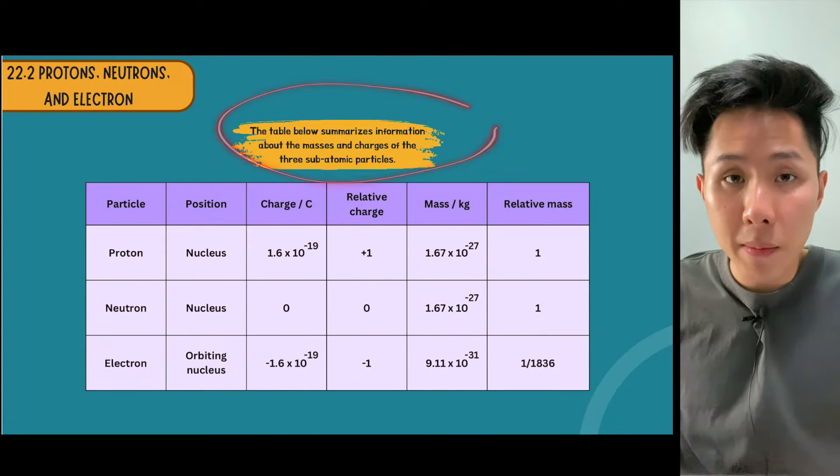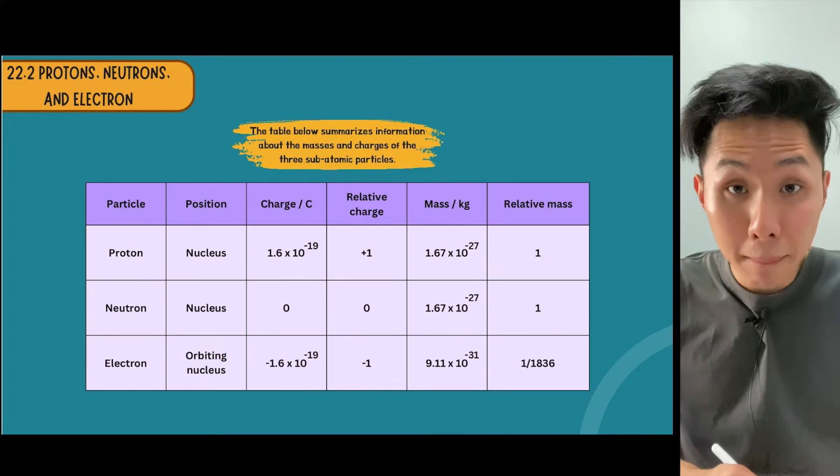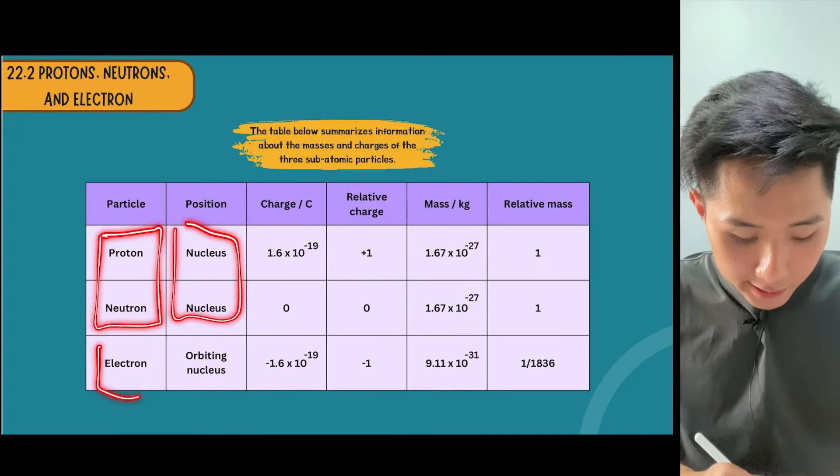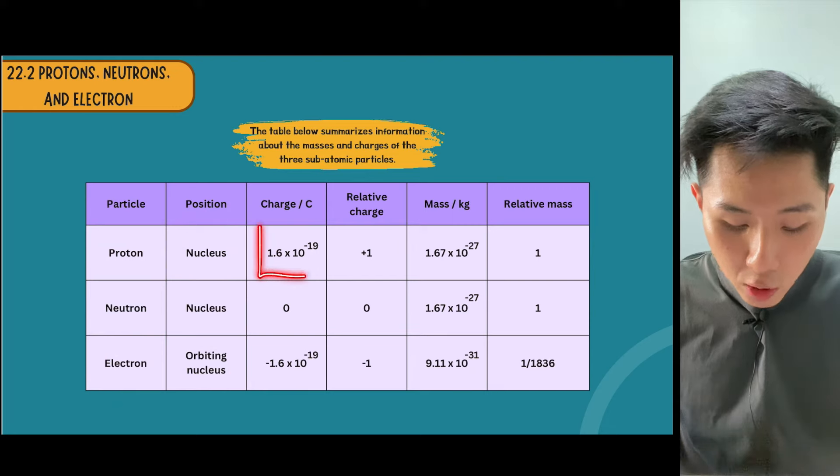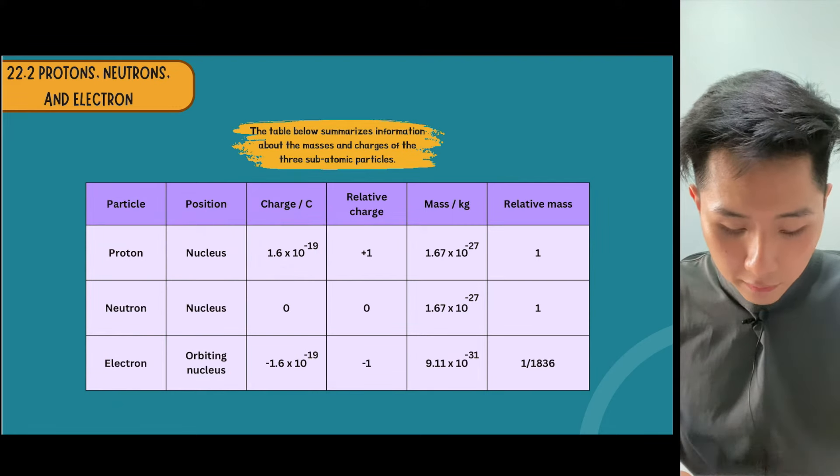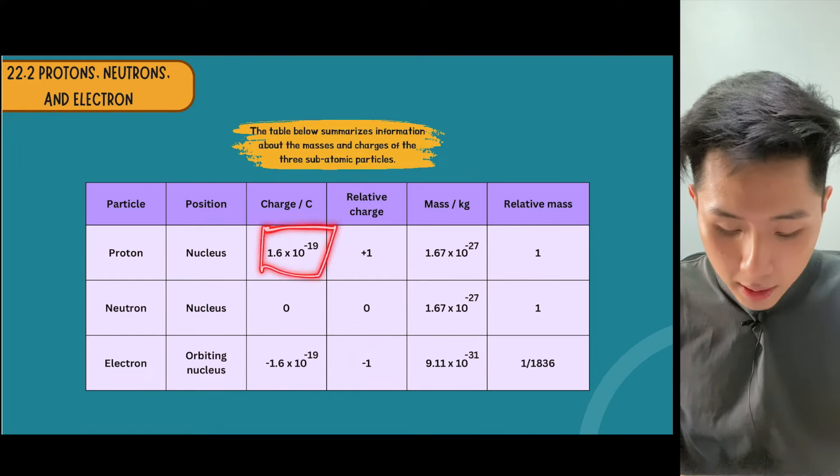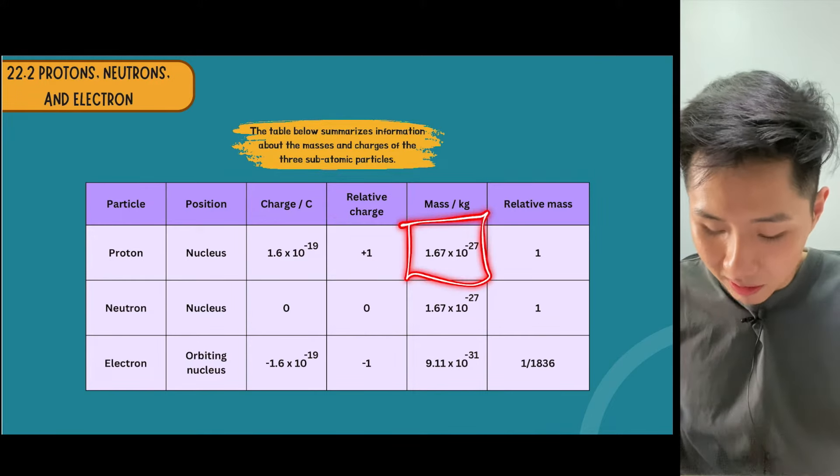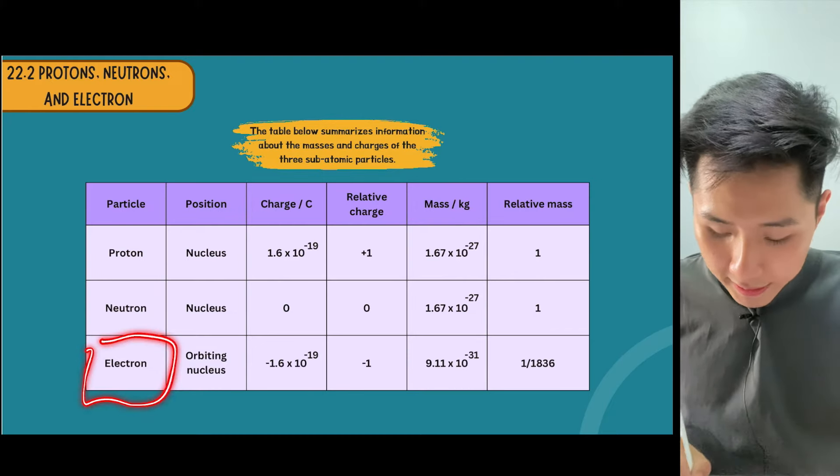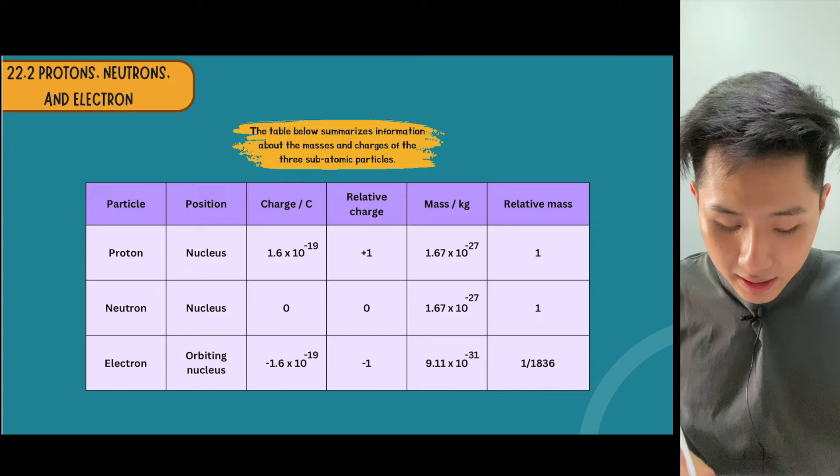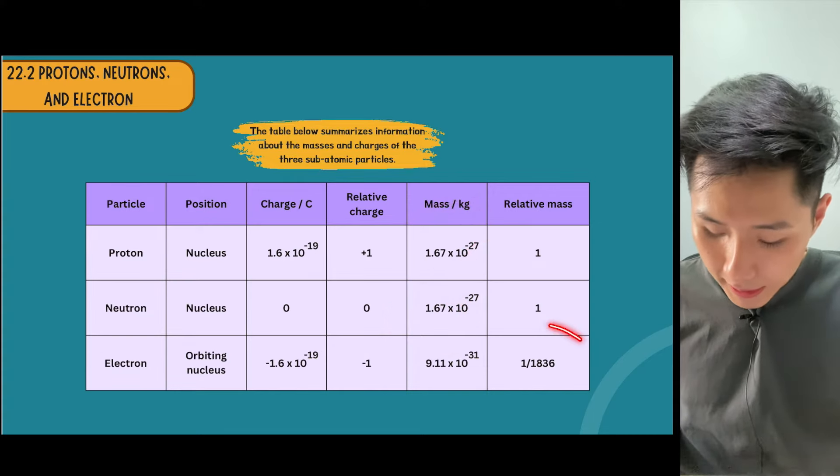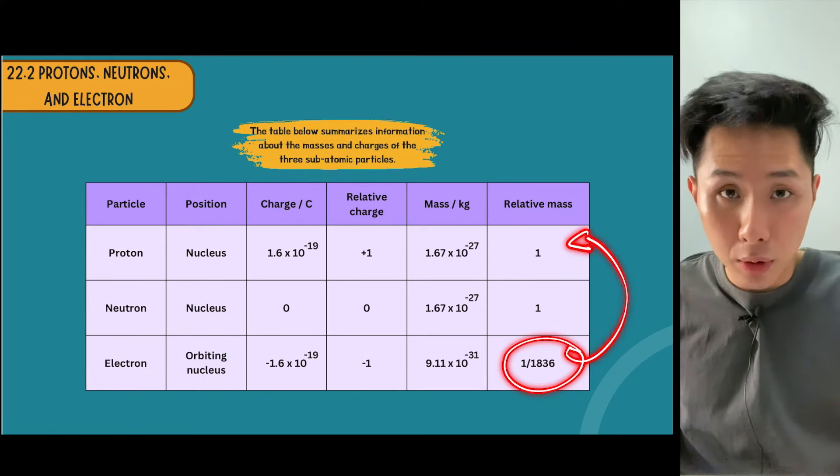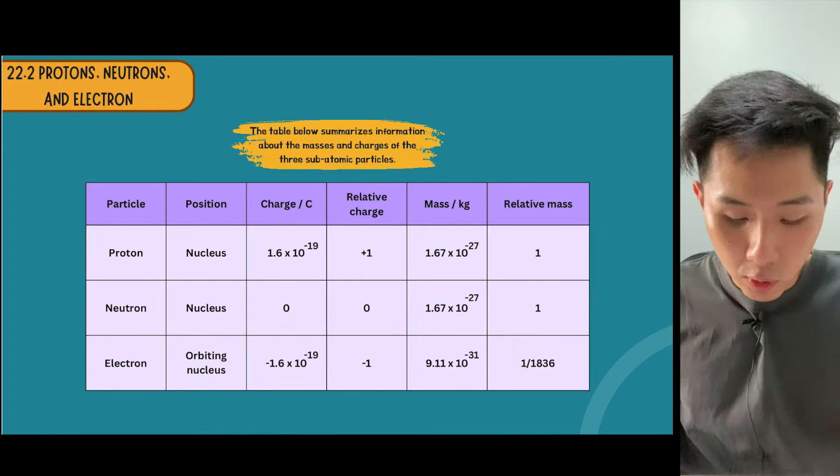This table summarizes the information on masses and charges of the three subatomic particles: proton, neutron, and electrons. Both protons and neutrons are in the nucleus whereas electrons orbit the nucleus. Protons have a charge of 1.6 times 10 to the power of negative 19 coulombs with a relative charge of 1. Electrons are lighter than proton and neutron, which is why when you calculate relative mass, electrons have a much smaller proportion compared to protons.